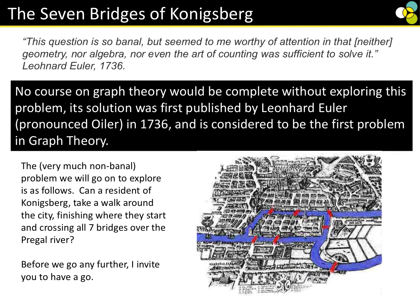What we're going to look at quickly is the Seven Bridges of Königsberg. This was a problem whose first solution was published by Leonard Euler in 1736, and it is considered to be the first problem on graph theory. Can a resident of the city take a walk around the city, finishing where they start and crossing all seven bridges over the river? Have a go.